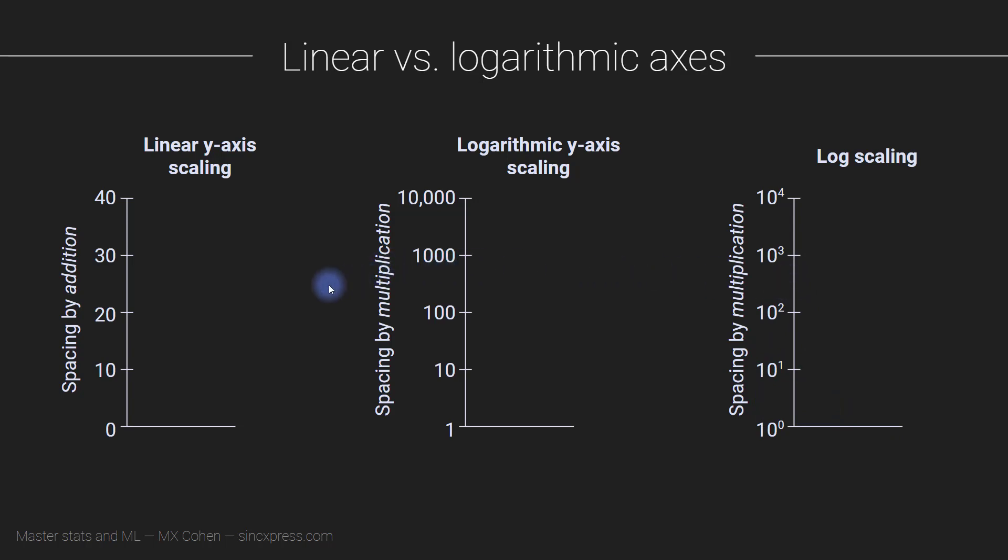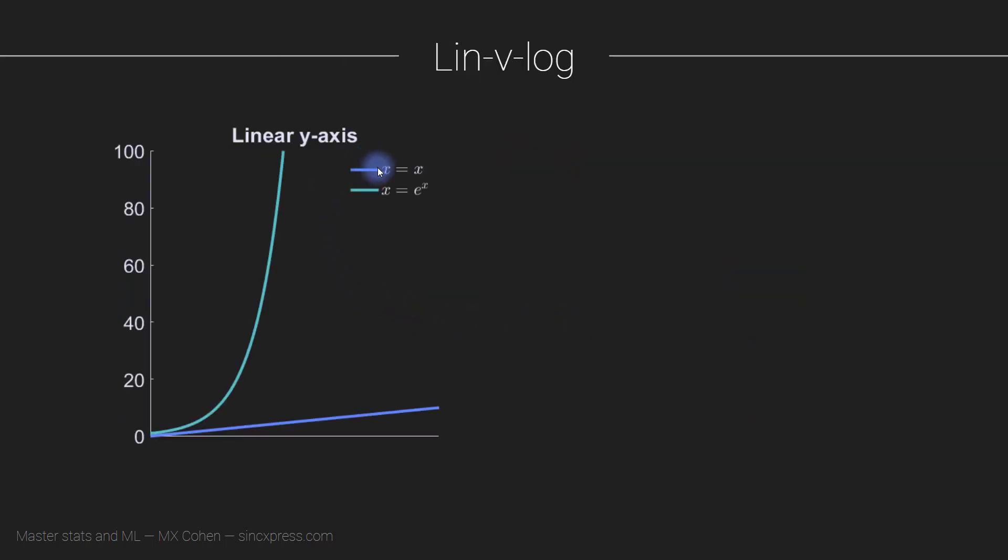I'm sure you are super curious about how data look, the same data, in a linear scale versus a logarithmic scale. Lucky for you, I have read your mind and I made a slide showing that. Here we have two functions, x equals x, so this is just a linear scale. Might not look like it's increasing linearly, but that's because the x-axis only goes up to 10 here. This goes up to x equals 10. In fact, the linear scale goes up to here, y equals 10. And here we have y equals e to the x.